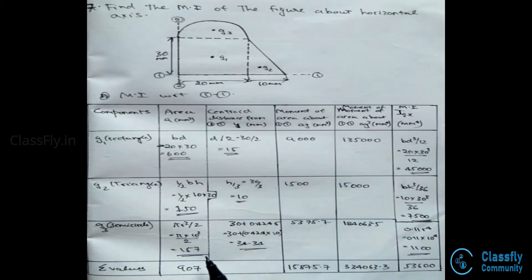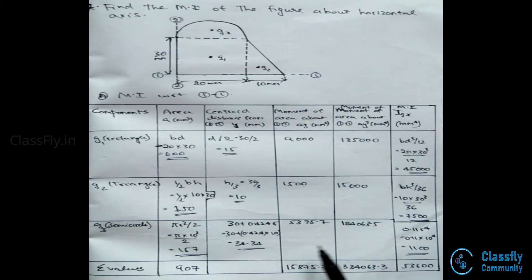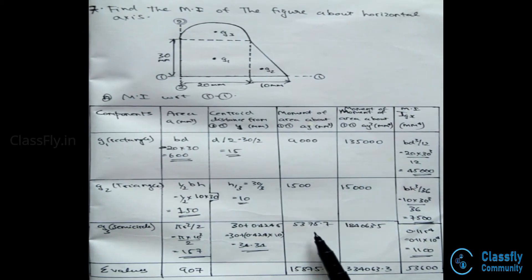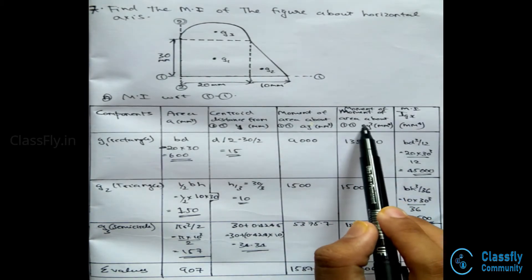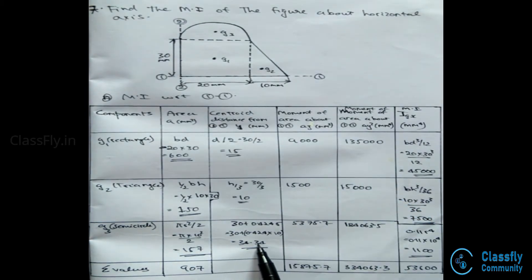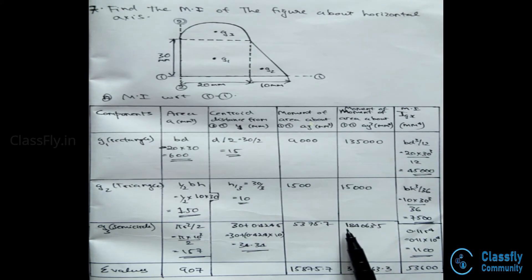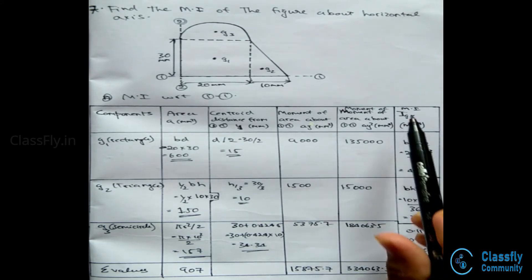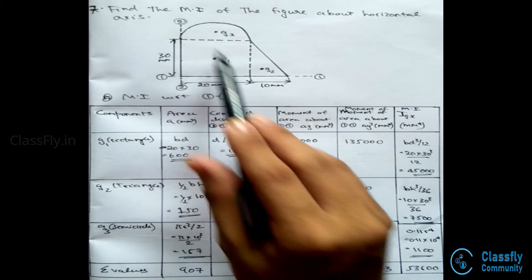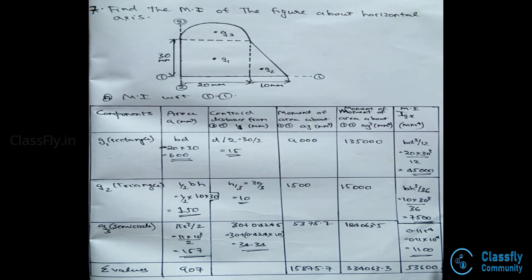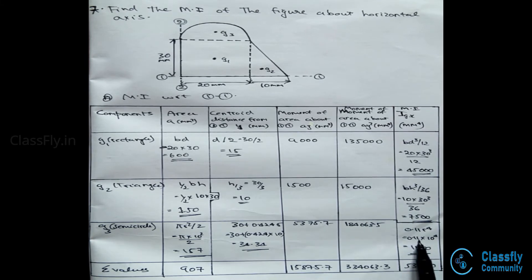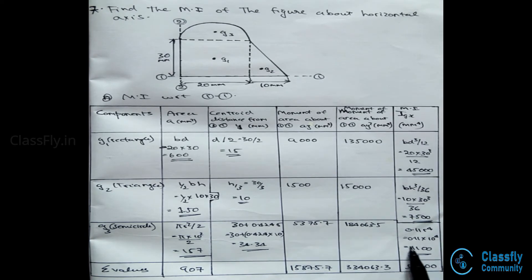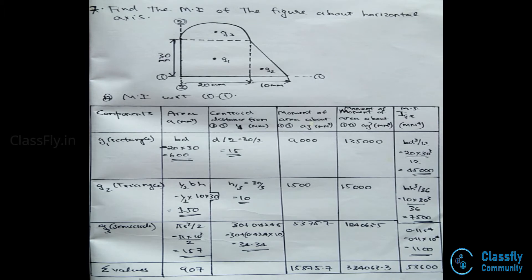Therefore A·y will be 157×34.34, which equals 5375.7, and A·y² will be 157×34.34², which equals 184063.5. The moment of inertia Igx for the semicircle is given by 0.11r⁴, that is 0.11×10⁴, which equals 1100.